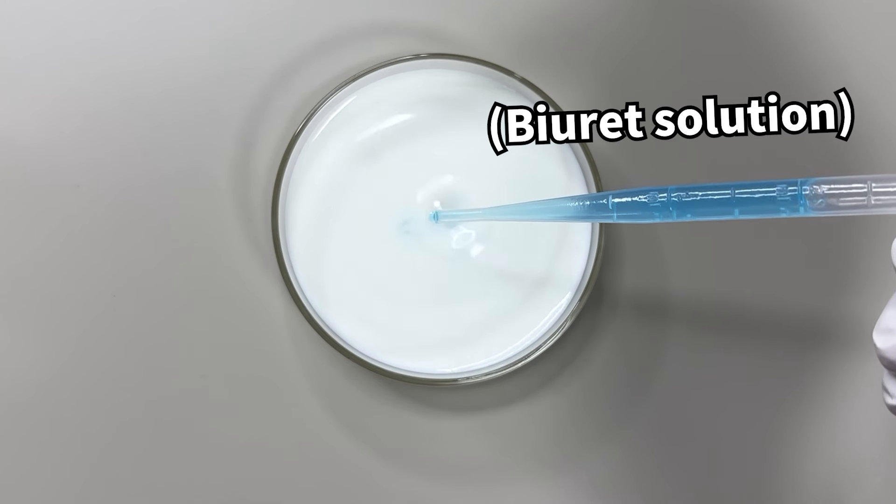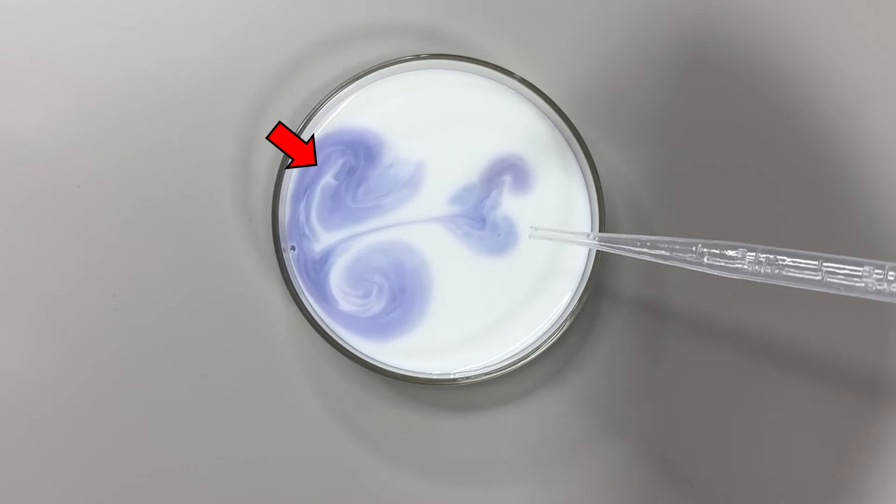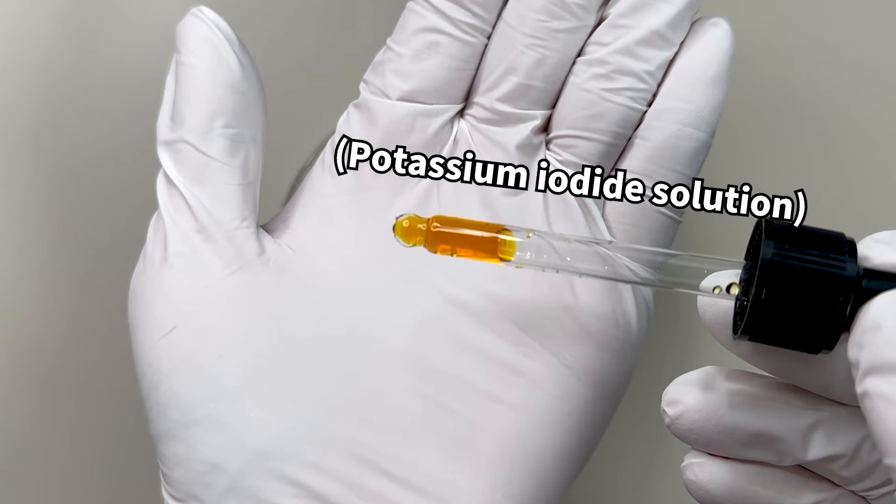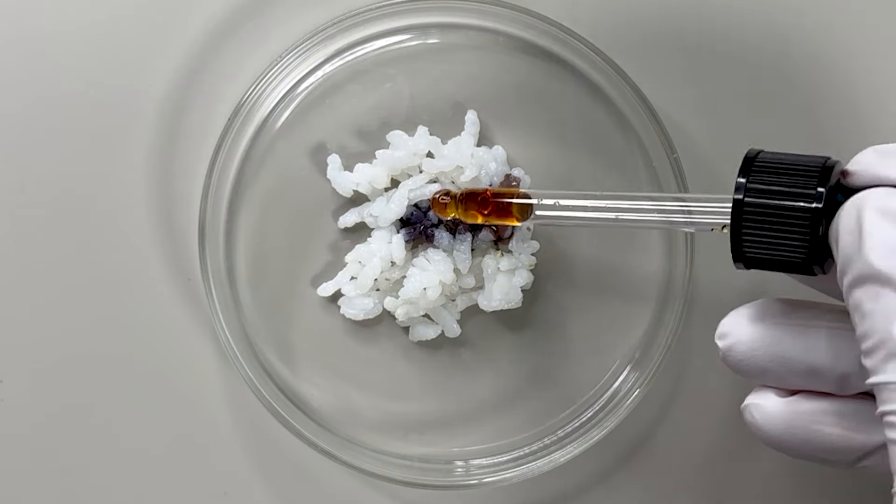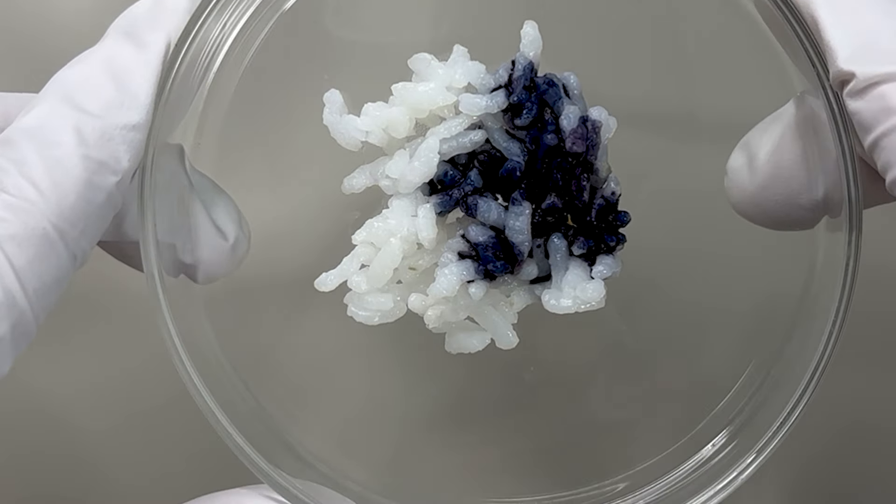For instance, we used a blue biuret solution to detect proteins because it turns purple upon contact with proteins. And a brown iodine solution, which we use to detect starch, turns blue-purple when it contacts starch, as demonstrated here.